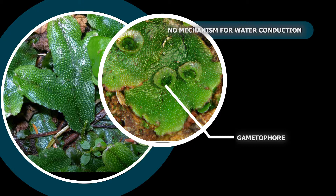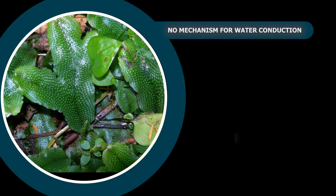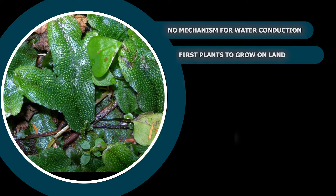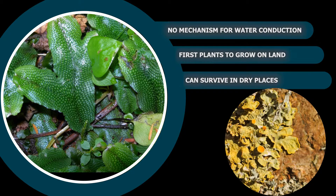As we know that every living being first originated from water, it is believed that bryophytes are the first plants to grow on land. They can survive in dry places but need water to reproduce.